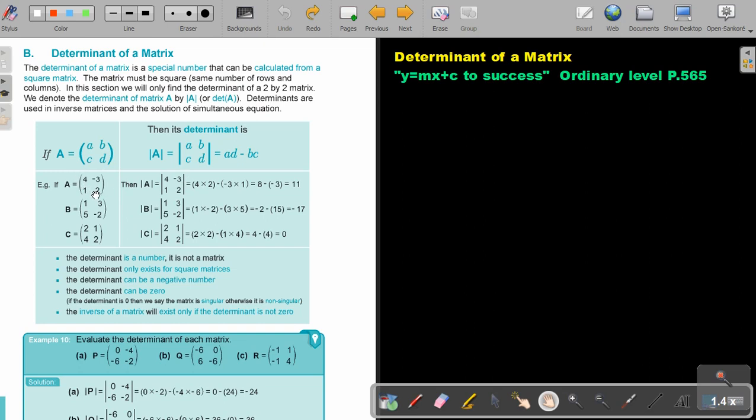So if I look at this one, 4 times 2, it's 8. Put it in brackets, otherwise you can get confused with the negatives. Bracket. Negative 3 times 1. So this is going to be 8 minus negative 3. And now you can just do a normal calculation. A negative times a negative is a positive. So 8 plus 3 will be 11.